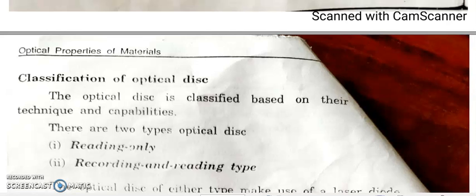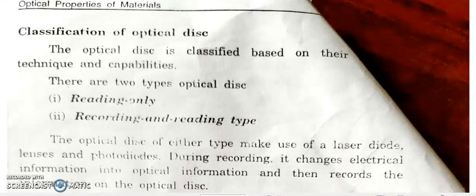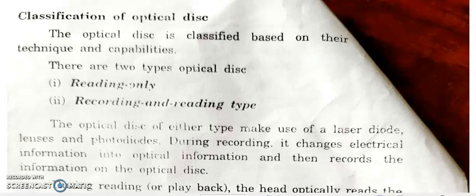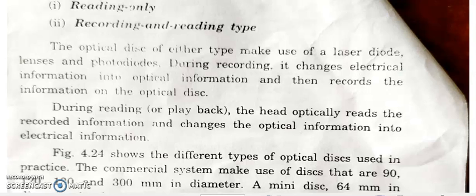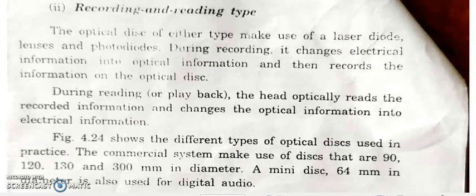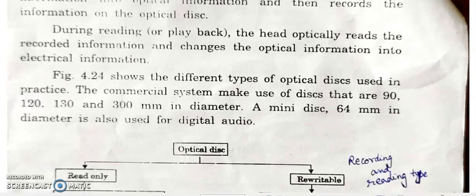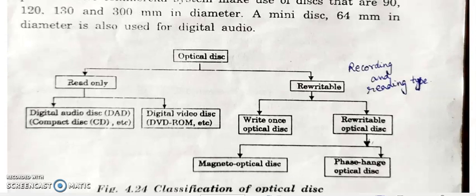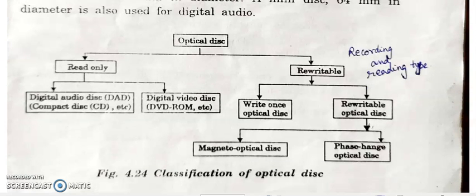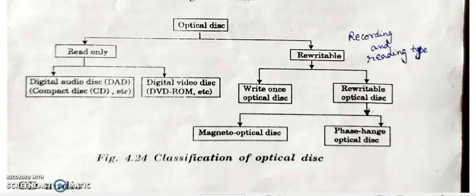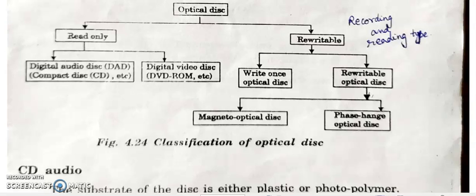Optical disks are classified into read-only and rewritable. Read-only is further classified into read-only CD and read-only DVD. Rewritable is also classified into two types: write-once optical type and rewritable optical disk. The rewritable disk is further classified into magneto-optical disk and phase-change optical disk.